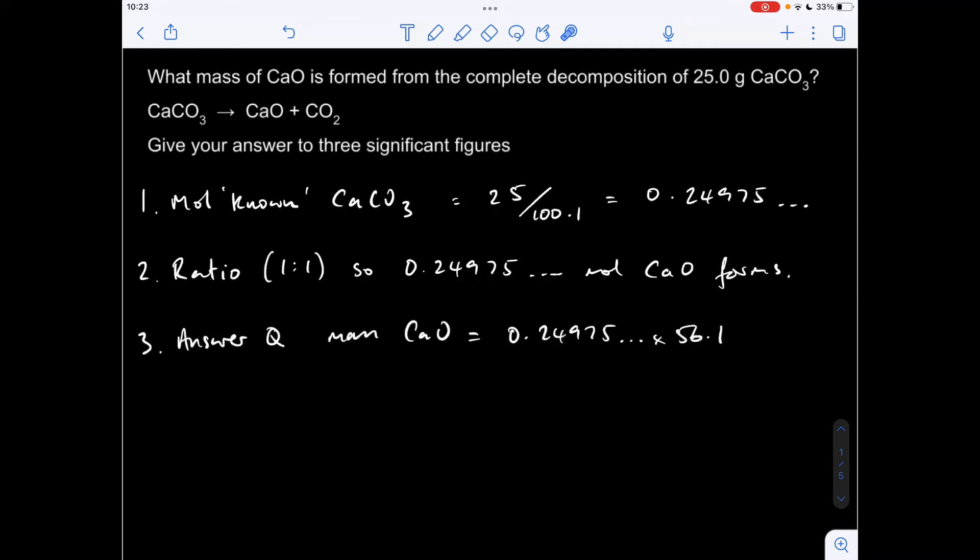And then the third and final part of this method, we basically answer the question. So the question was what mass of calcium oxide. So we need to turn these moles into mass grams. So we just multiply the moles by the MR of calcium oxide, and it comes out at 14.0 grams to three significant figures.